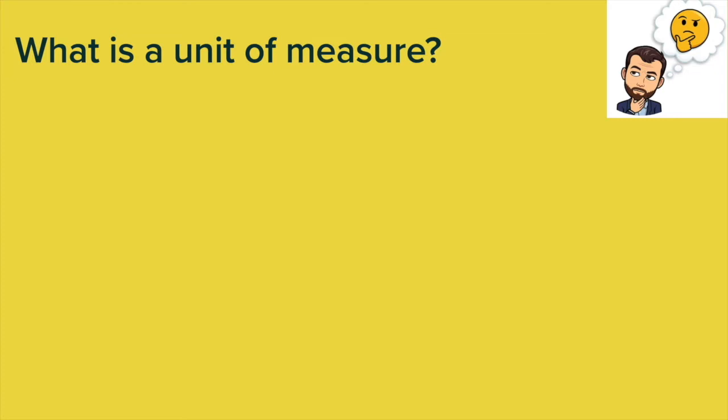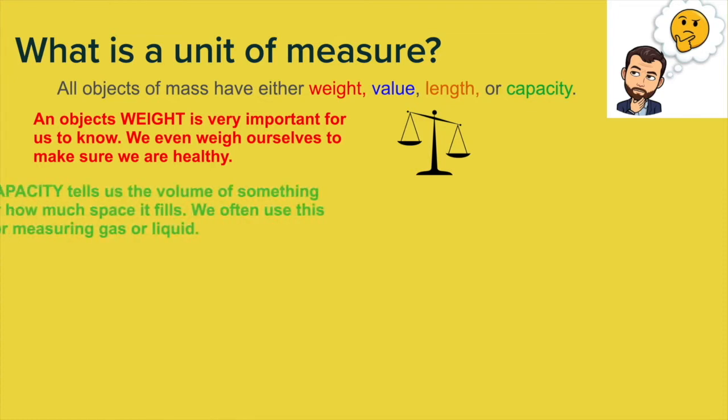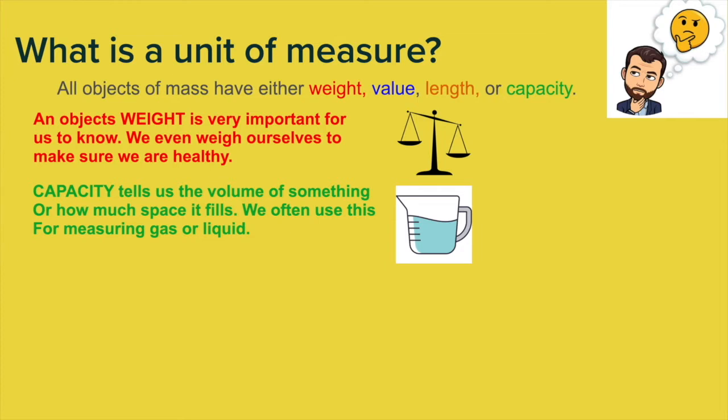What is a unit of measure? Well, to really understand we have to go back to the basics of the meaning. All objects of mass, so anything that you can hold in your hand basically, either have a weight, a value, a length, or a capacity. An object's weight is very important for us to know. We even weigh ourselves to make sure we are healthy. We need to know weight of objects, maybe if we're going to carry the object or if we're going to send it in the mail. So weight is very important in our daily lives.